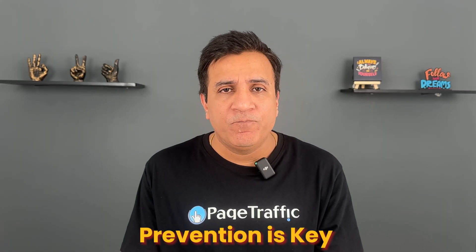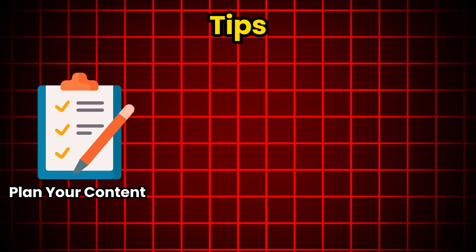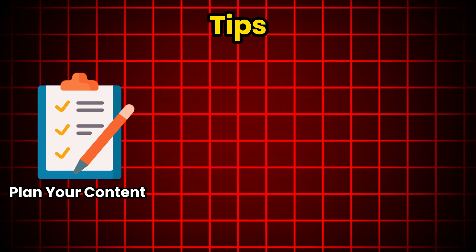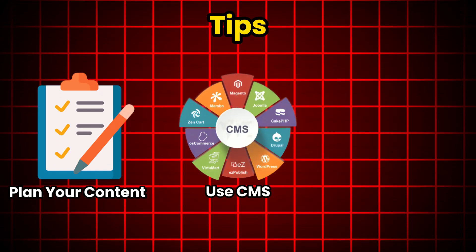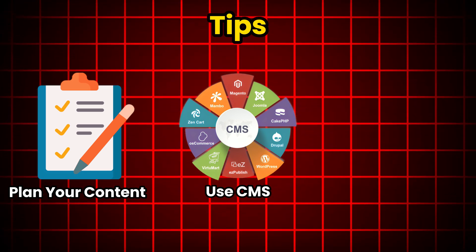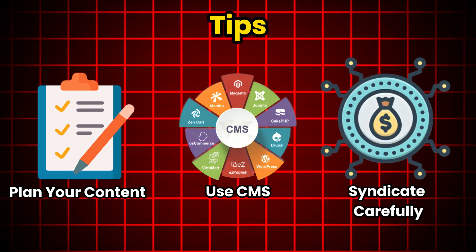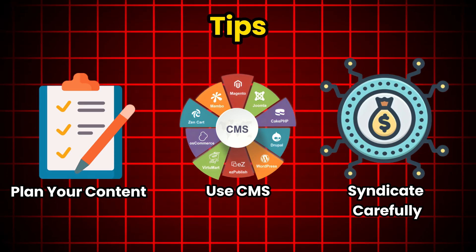Prevention is key. The easiest way to deal with duplicate content is to prevent it in the first place. Plan your content: make sure each page has a unique purpose and target keywords. Use a CMS: a content management system helps organize your content and avoid accidental duplication. Syndicate carefully: if you syndicate your content, use canonical tags to point back to the original.